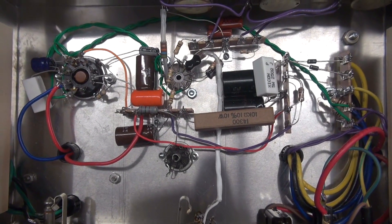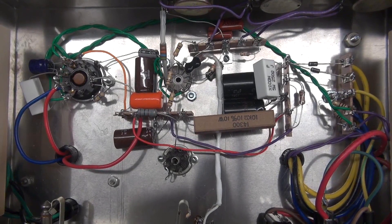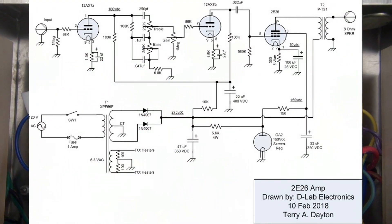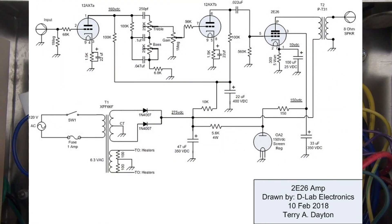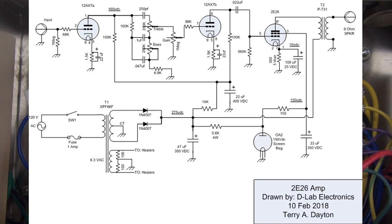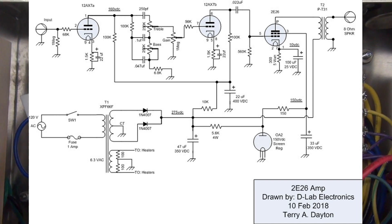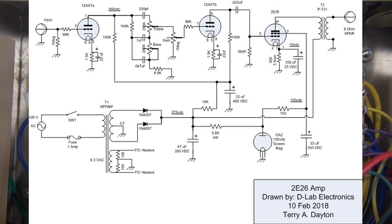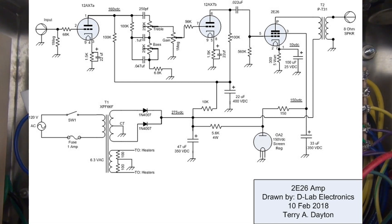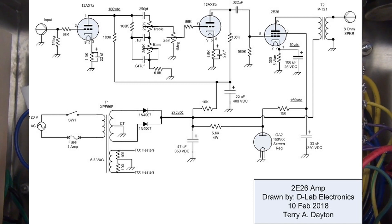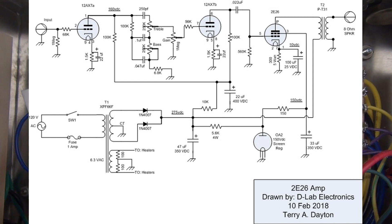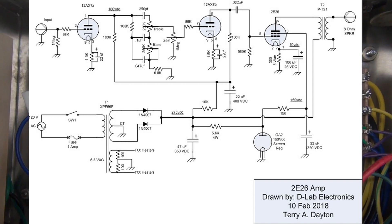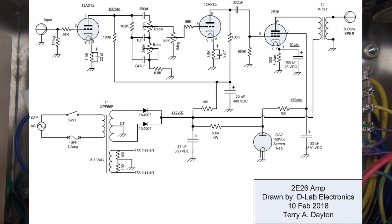Here is the first 2E26 schematic that I released a couple weeks ago for you guys to build one on your own if you wished. Take a look at the screen circuit supply. I come off the one filter cap, then I go through the 5.6K resistor and then from there it hits the OA-2 and from there I had a resistor that went up and fed the screen of the 2E26. I found that it had a little bit more hum than what I wished to have so I added another filter cap.